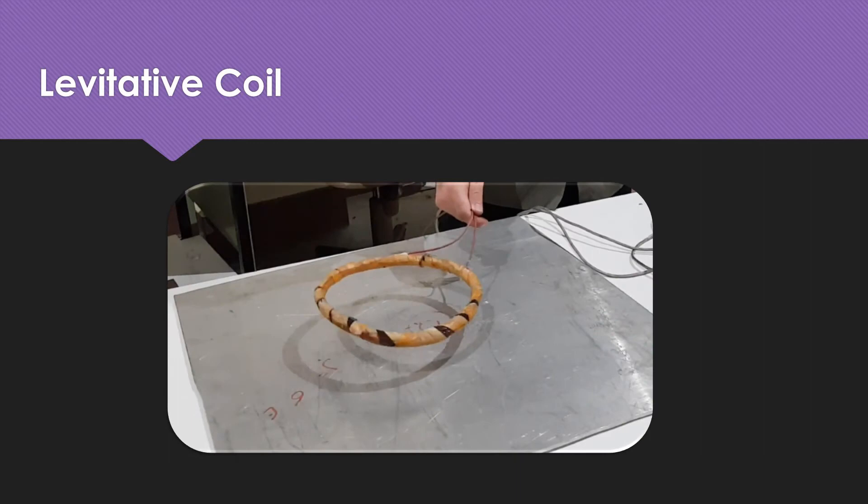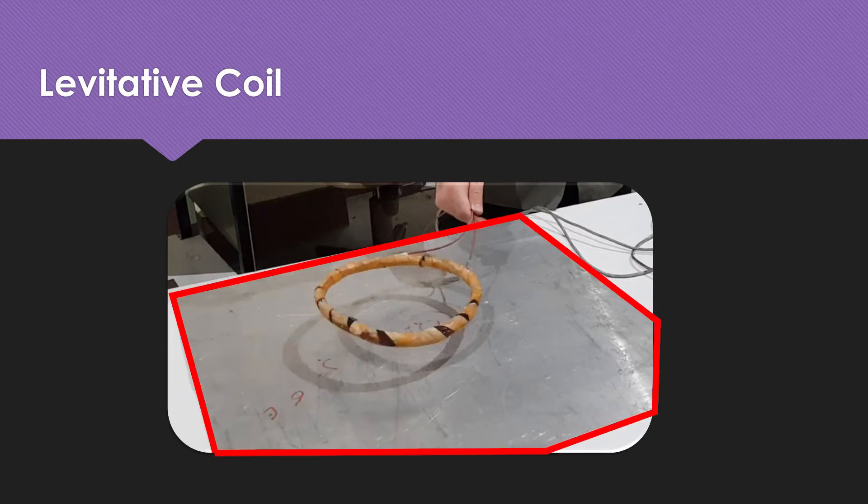This image shows the hovering coil. To do this experiment we need a coil with several turns, about 400, and a metal sheet under it which here is made of aluminum.